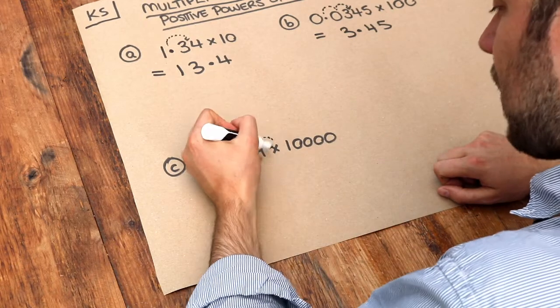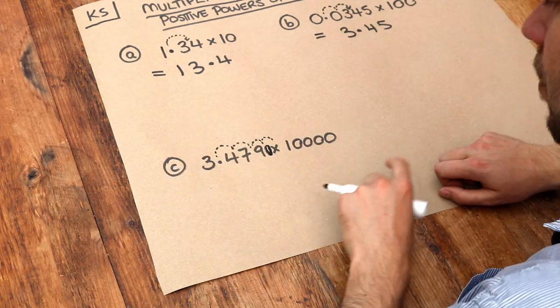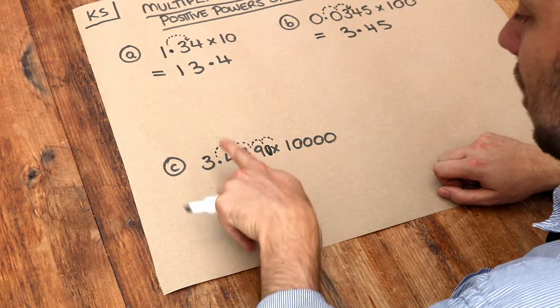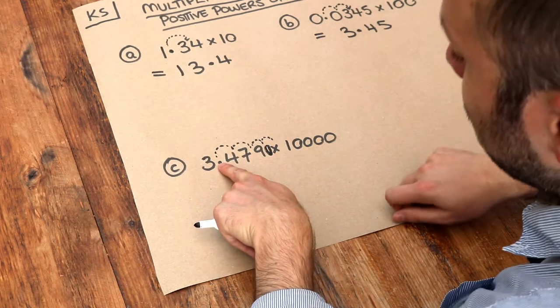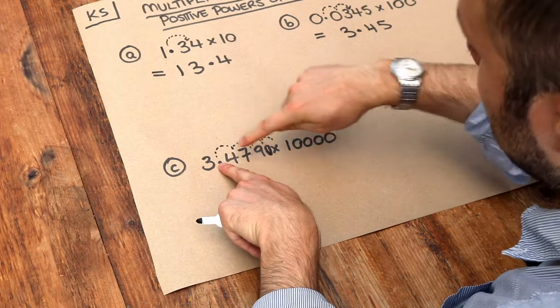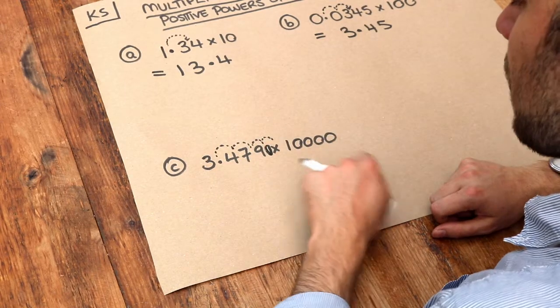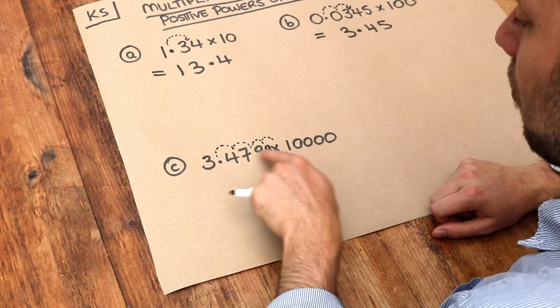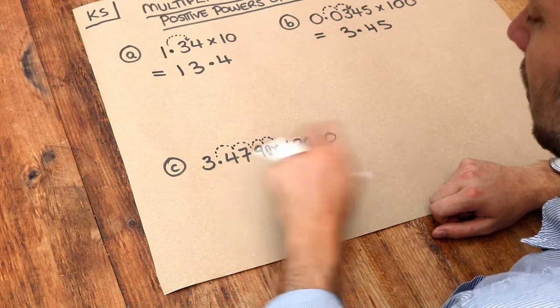And the easy way to fix that is to just put a zero here, because if you think about it, that doesn't change the number, because this decimal point here still ensures that this is the unit's digit, this is the tenth's digit, etc. So we can add zeros onto the end of the number, provided that it's after that decimal point.